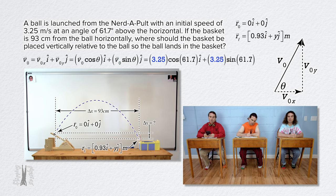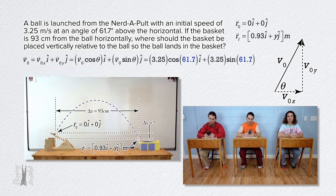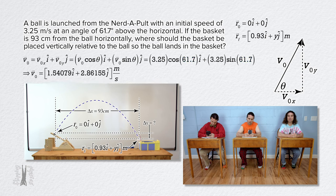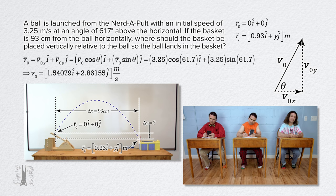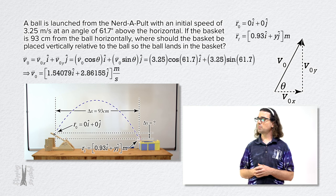Initial velocity is 3.25 meters per second, and theta is 61.7 degrees. So, the initial velocity is 1.54079i plus 2.86155j meters per second. Very nice, Bo.